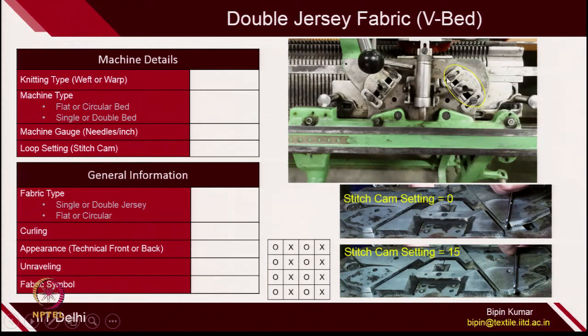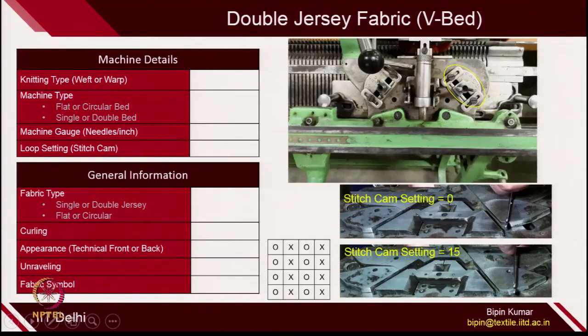But if you slide this stitch cam to the bottom most position, the stitch cam will reach at this location. Here, the needle butt has to descend too much carrying the yarn, so that the loop length will increase. This cam setting is 15. On the machine, you should be knowing on which stitch cam setting you are operating the machine.